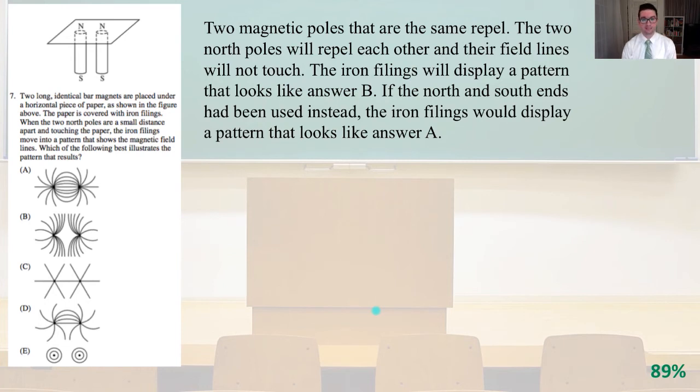The two magnetic poles that are the same repel. The two north poles will repel each other, and their field lines will not touch. The iron filings will display a pattern that looks like answer B. If the north and south ends had been used instead, the iron filings would display a pattern that looks like answer A. But it is answer B.